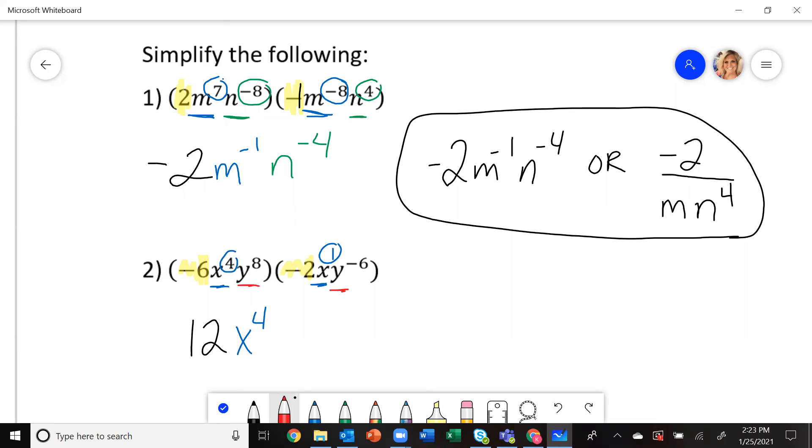Then you're going to do that for the y's. Eight plus negative six gives you y to the second power. They are positive. This would be your final answer.